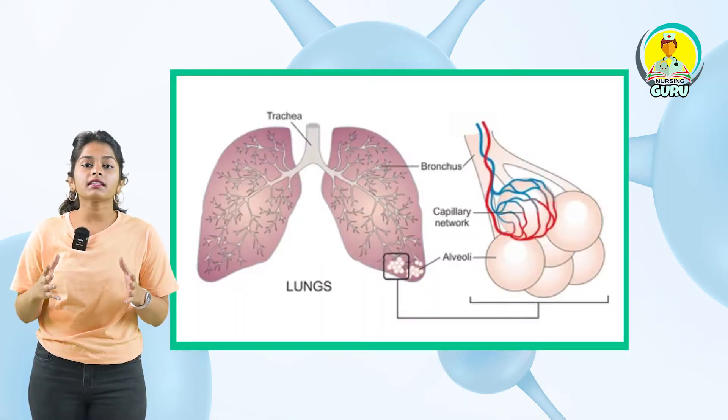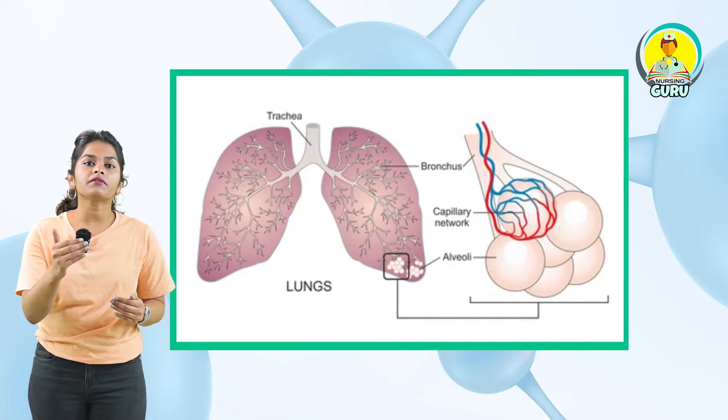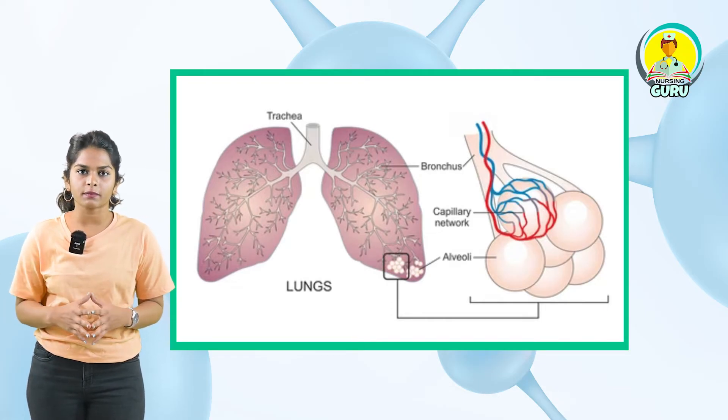The next up we have the trachea. Trachea is a straight tube extending from the mid thoracic cavity up to the fifth thoracic vertebrae. The trachea further divides into bronchi. These bronchi divide into primary, secondary and tertiary bronchioles. Bronchioles are supported by cartilaginous rings which prevent their collapsing. These bronchioles open up into irregularly shaped alveoli, which are the actual site of diffusion where respiration takes place.